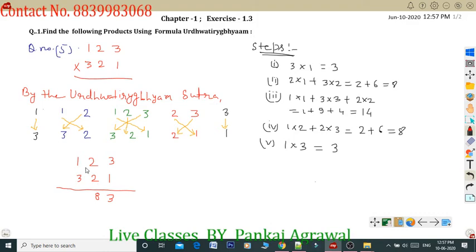Next. Third step, you can see here. 1 into 1, you will multiply. Then 3 into 3. Then 2 into 2. Third step, 1, 1, 3, 9, 2, 2, 4, you will add this. Then it will be 14. So, 14 of 4, you will write. 1 will be carried.